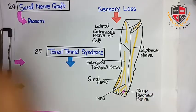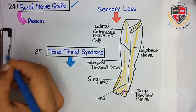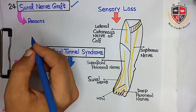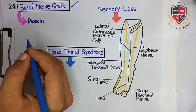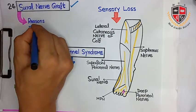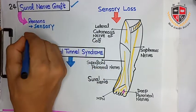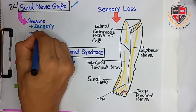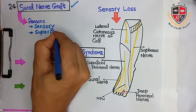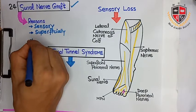The next clinical is Sural Nerve Graft. The sural nerve is one of the superficial nerves that can be grafted. The reasons for its grafting are as follows: the sural nerve is sensory, and it is superficial so it can be easily identified.